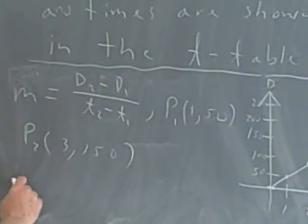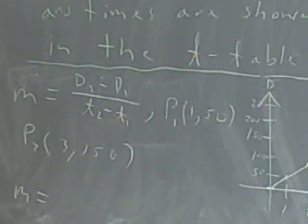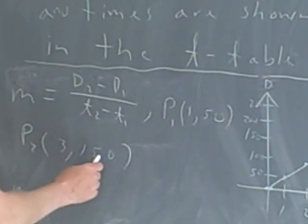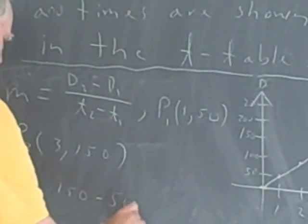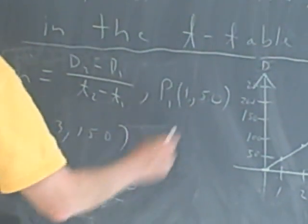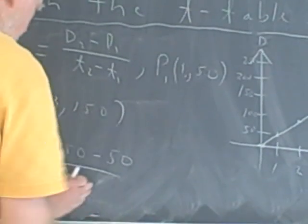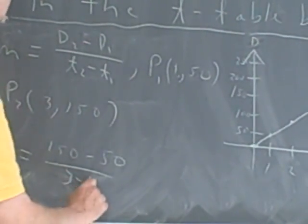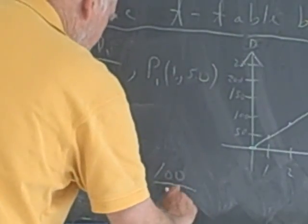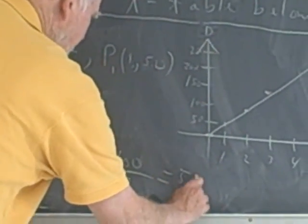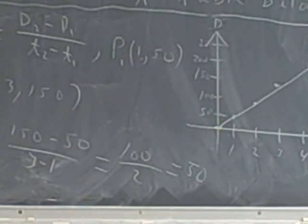So the slope's not too hard to find. It's just m equals 150 minus 50 over 3 minus 1. Then I end up with 100 over 2, which is 50. So I have a slope of 50 here.